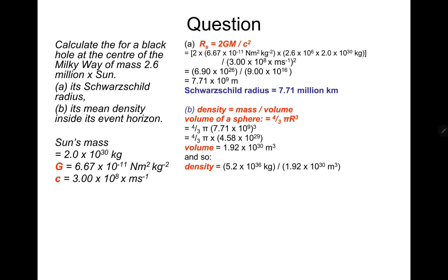Then density is mass over volume, so the mass is 2.6 million times the mass of the sun. Divide by the volume that you just calculated. So the mean density inside the event horizon is 2.71 times 10 to the 6 kilograms per cubic meter, which is obviously much lower than in the previous example.